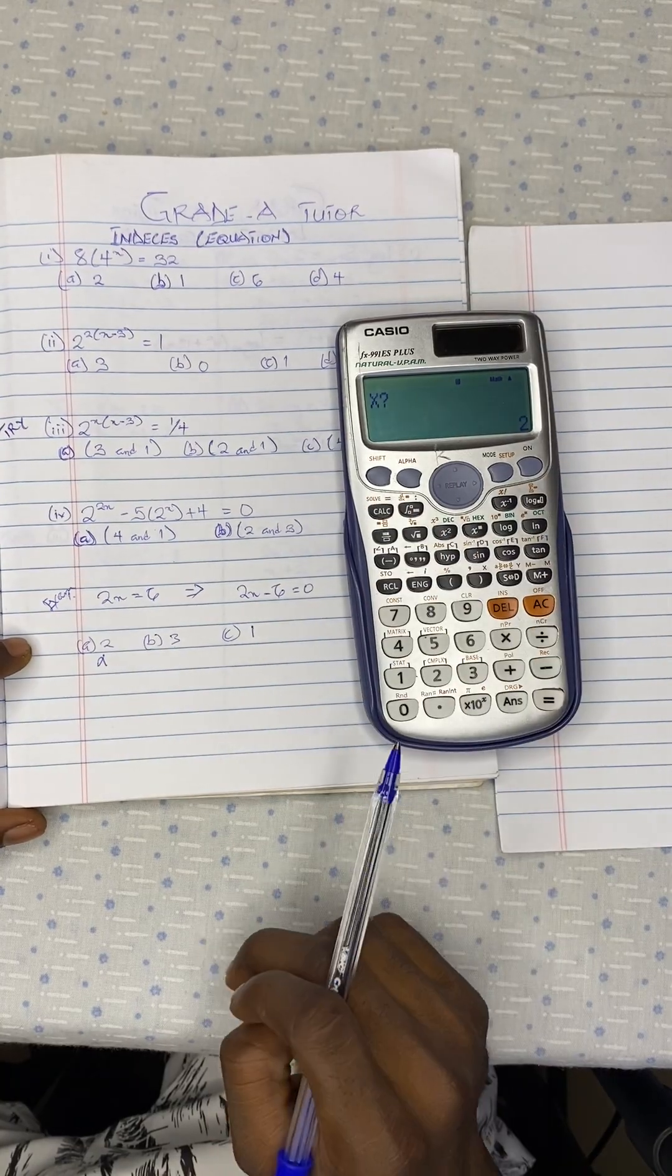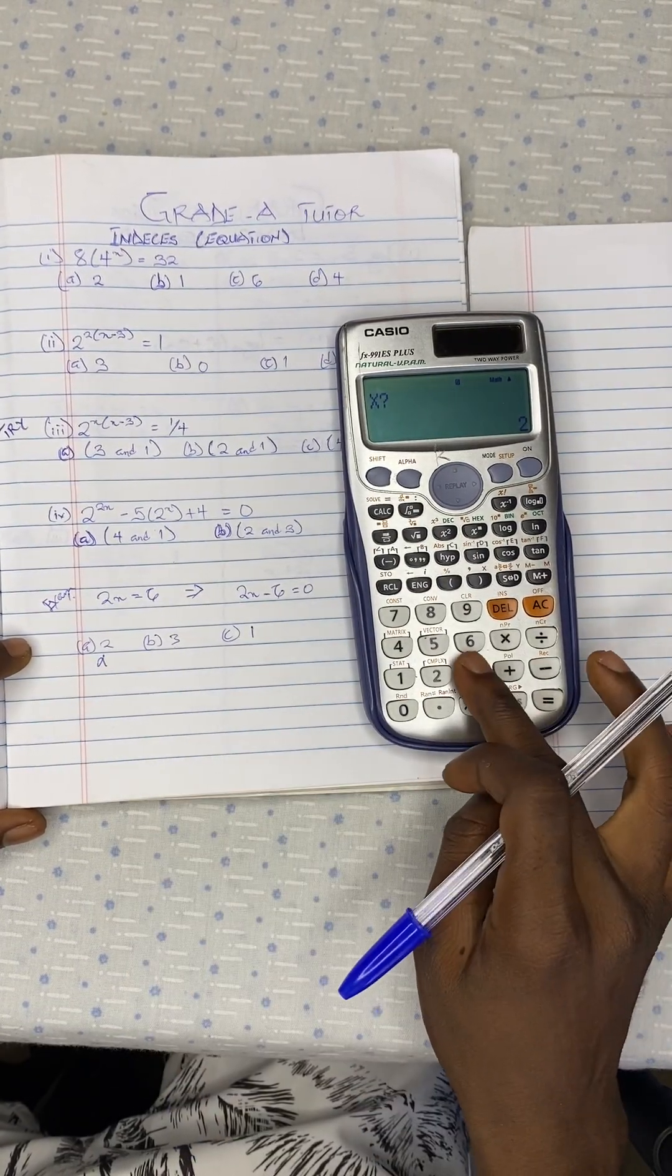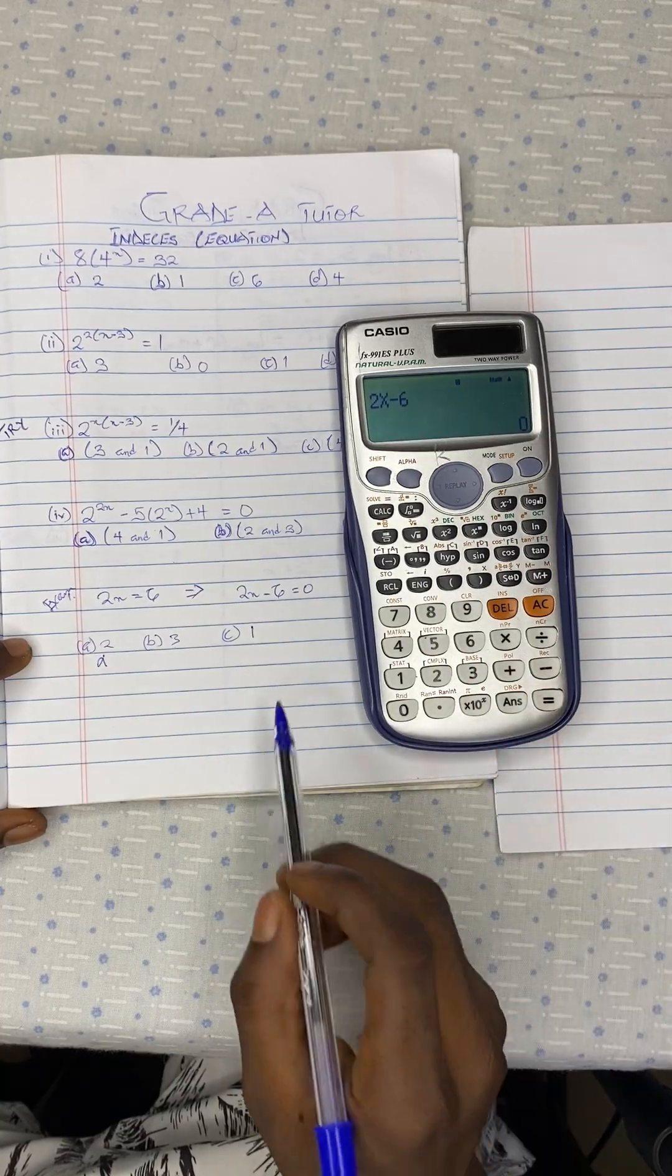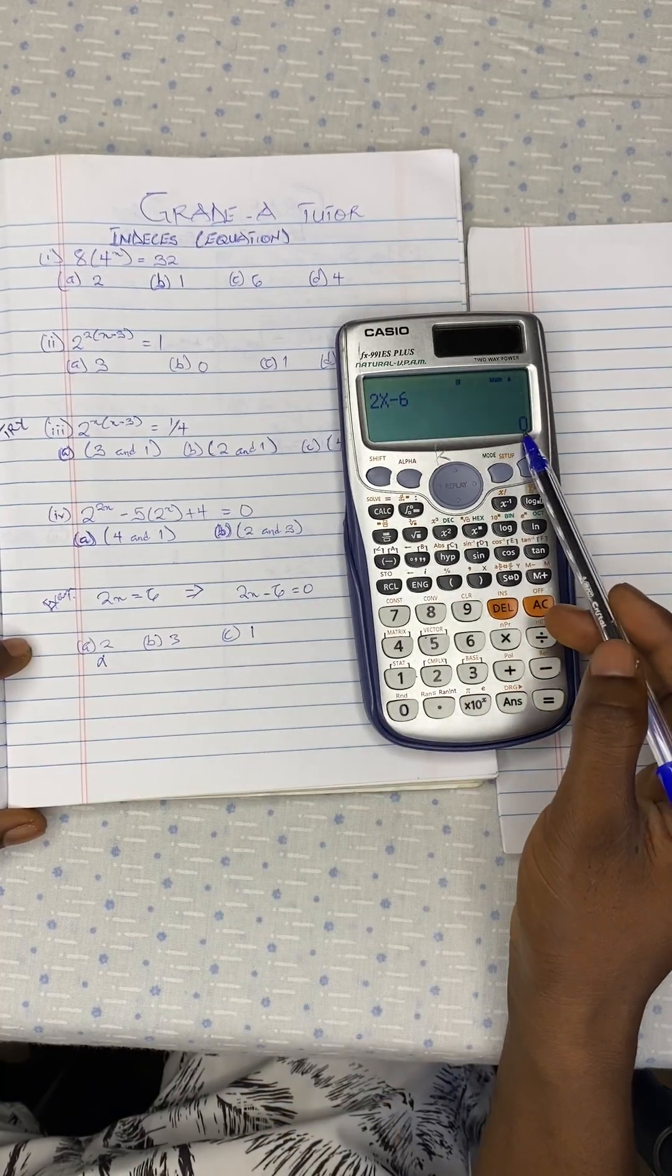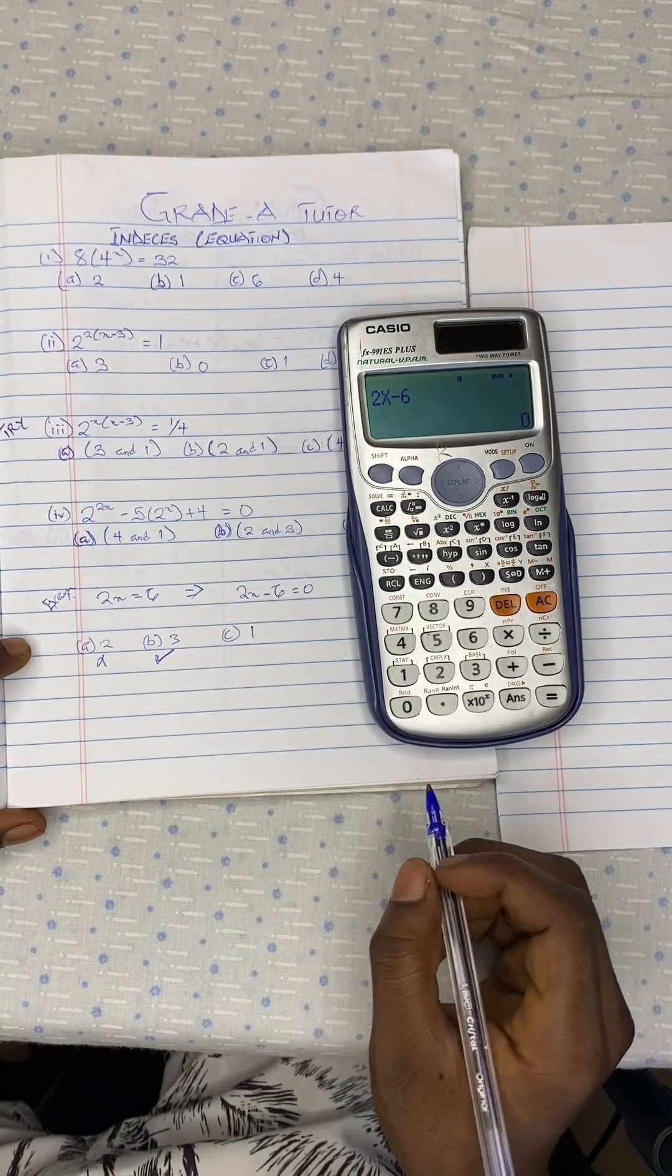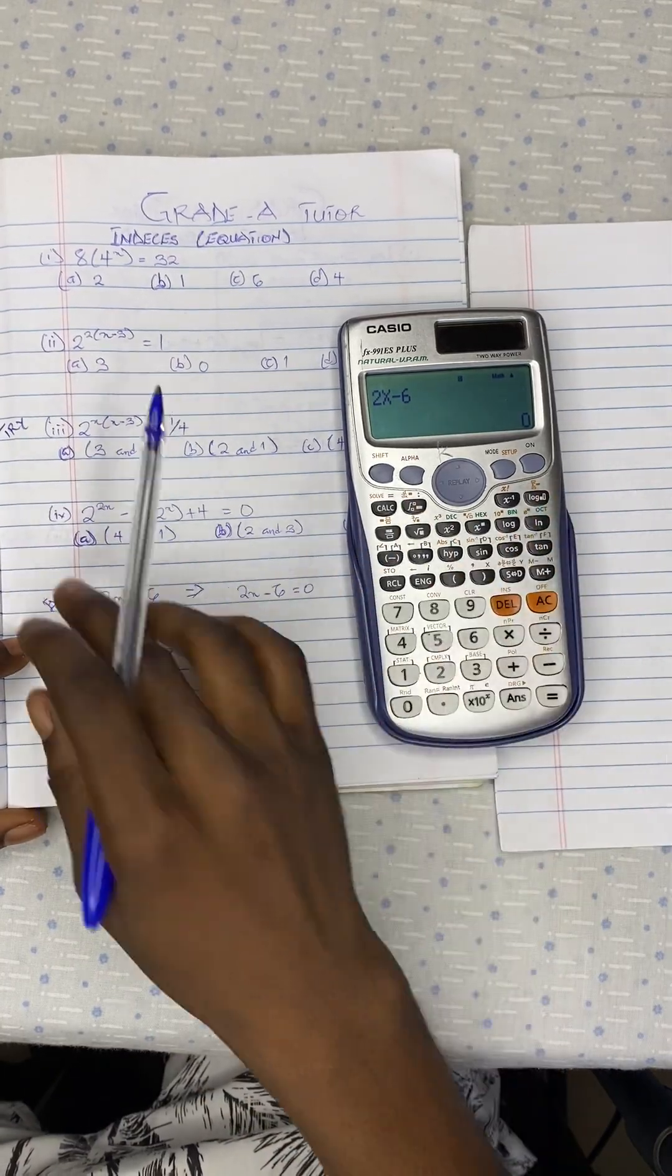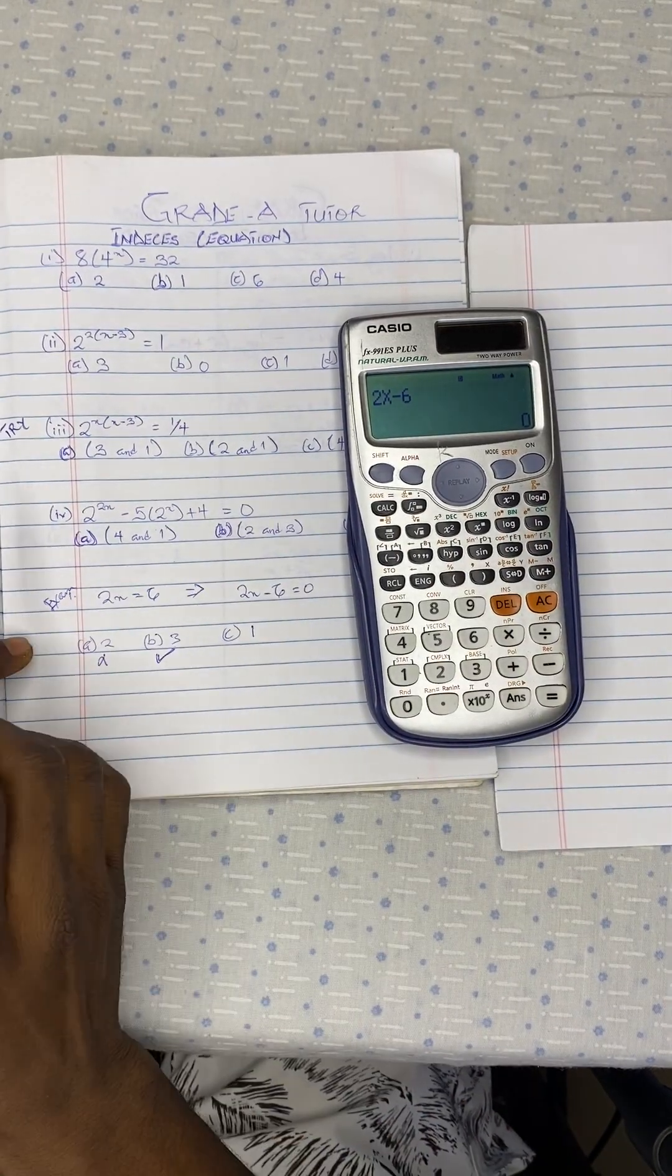Let's look at option B. We press on the same key. Then we insert 3. We press on equal to. And now our answer is equal to 0. So this one becomes our answer. So this is what we are going to do for all the questions.